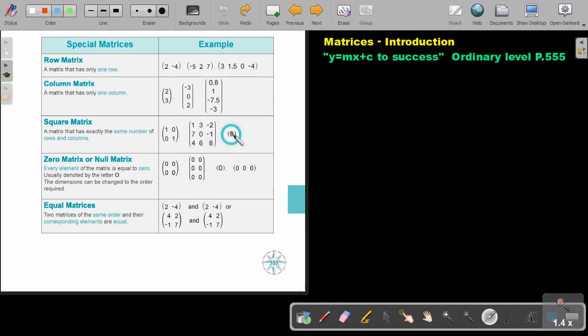And this is one row and one column. A zero matrix or a null matrix. Every element of the matrix is equal to zero. Usually denoted by the letter O. The dimensions can be changed to the order required. So, all the elements will just be zero. It doesn't matter how many rows or columns, but all the elements will be zero. And you can write it. Let me just show you.